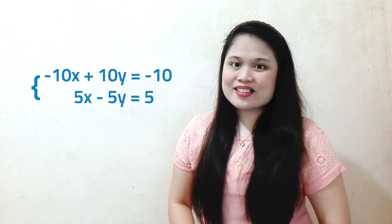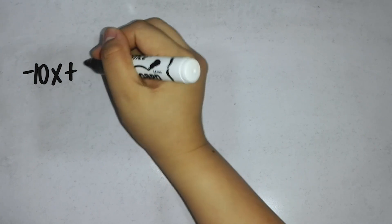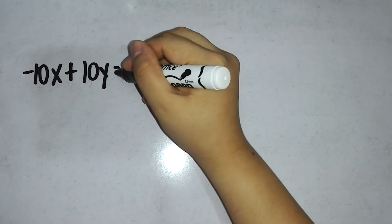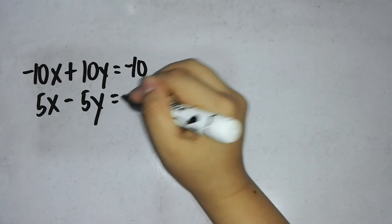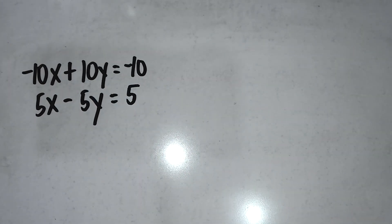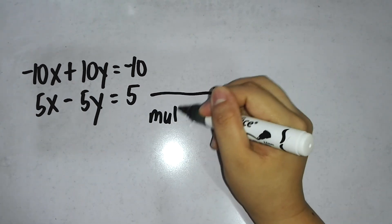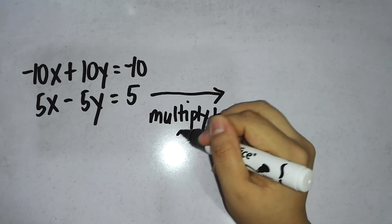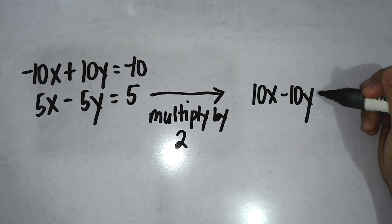Can you solve this one as well? For step 1, write both equations in standard form ax plus by is equal to c. Negative 10x plus 10y is equal to negative 10. And 5x minus 5y is equal to 5. For step 2, multiply one or both equations by non-zero constants to create opposite coefficients for one of the variables. To eliminate x, we will multiply the second equation by 2. We get 10x minus 10y is equal to 10.